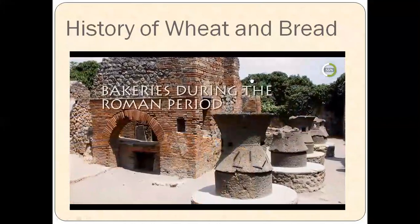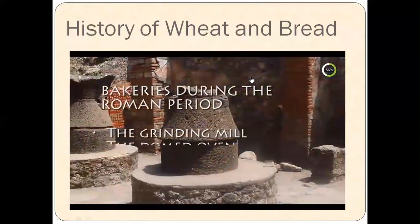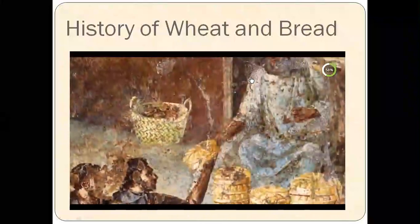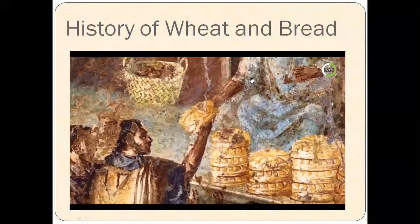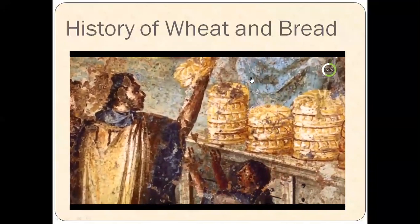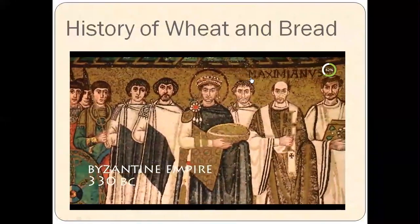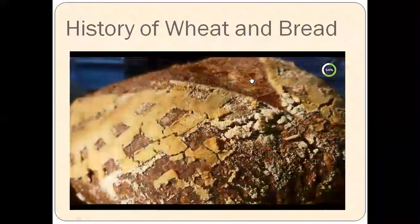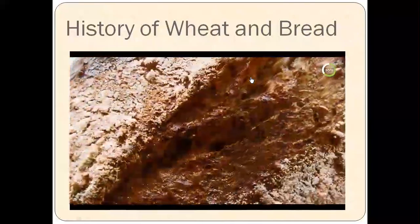The bakery bread industry was comprised of five parts: the grinding mill, the domed oven, the storeroom, the sales area and the baker's house. The Romans have also been credited with using beer yeast in bread making, which they discovered during the conquest of countries that produced beer, such as the Gauls, Britons and Iberians. As the art of bread making developed, bread now had a prominent place in the daily diet of the Byzantines, where bread quality varied in accordance with the type of flour as well as the manner in which cereals were milled.